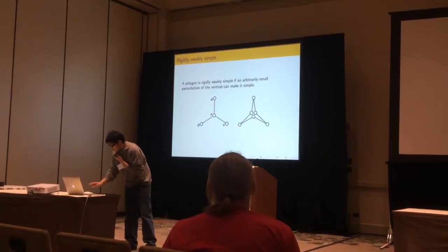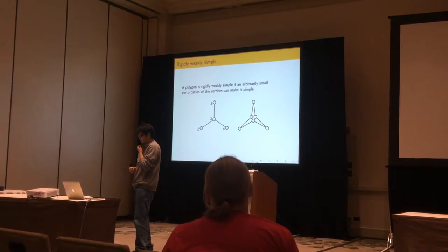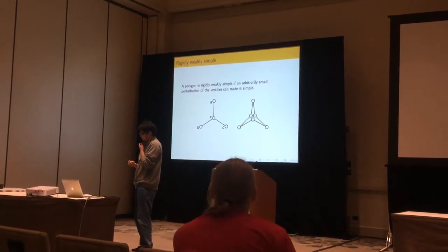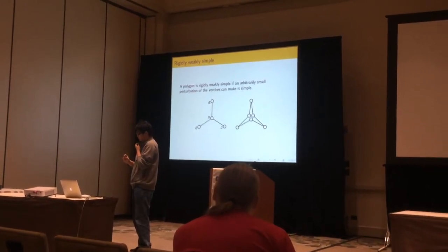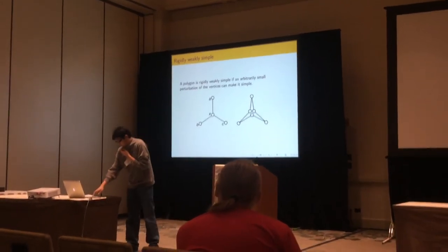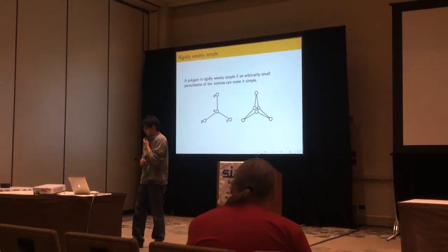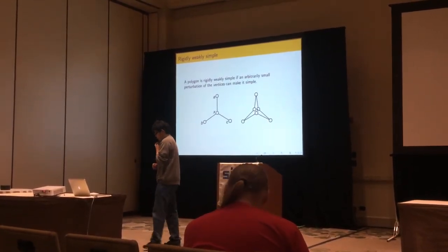For polygons, we can define another kind of weakly simple, which we call rigidly weakly simple. So a polygon is rigidly weakly simple if an arbitrarily small perturbation of the vertices can make it simple. For example, I'm perturbing the vertex X to make this polygon rigidly simple.